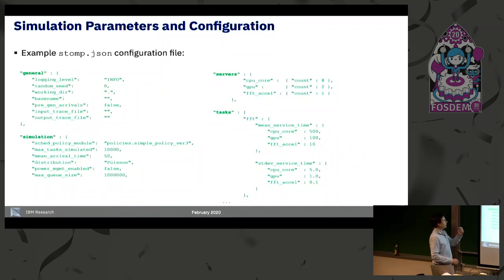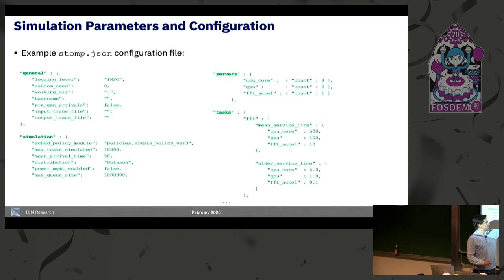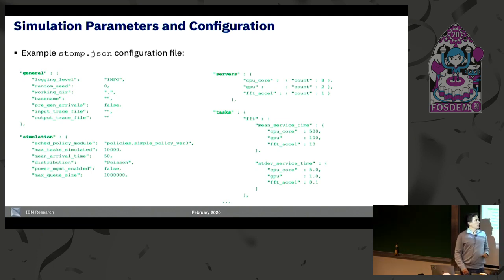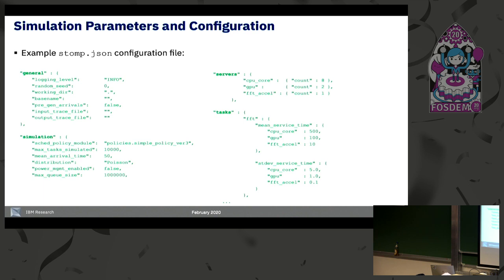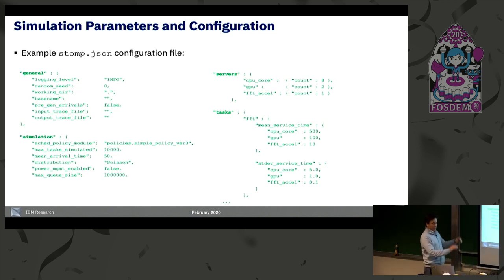We can easily configure STOMP with different parameters. For example, we can indicate which scheduling policy to use — in this case, STOMP looks for a Python script called simple_policy_v3 under the policies folder. Then we configure the number of processing elements: in this example, eight general-purpose cores, two GPUs, and one FFT accelerator. We then define our tasks — for example, tasks of type FFT with different service times for each processing element type, plus other task types like decoders or convolutions.